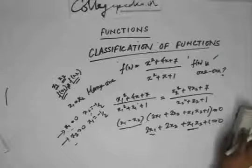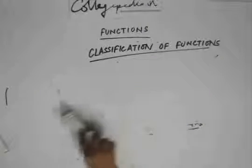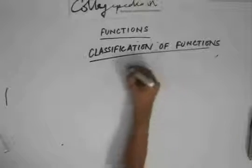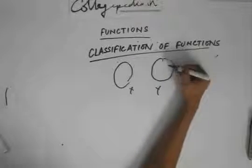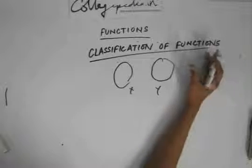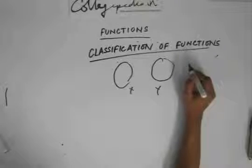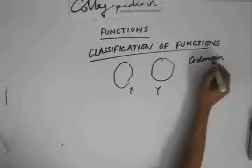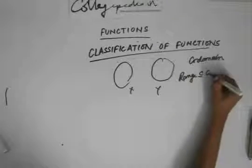Now there's another classification done for functions, depending on whether the range is equal to the co-domain or not. When you have a function with two sets x and y, the set y can have any number of elements. All the elements in set y constitute the co-domain, and only some of those elements lie in the range. So the range, in general, is a subset of the co-domain.